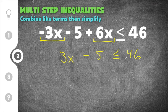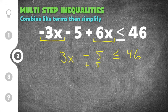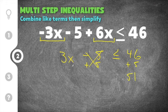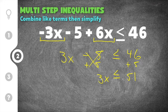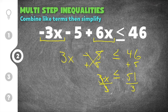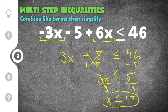Our variable is on the left. All the like terms have been combined and we need to move this constant from the same side as the variable to the opposite side. I have to get rid of this minus 5 on the left side. The opposite of minus 5 is plus 5, so I'm going to add 5 so that the 5's cancel, and also add 5 on the right side. On the right we have 46 plus 5 which is 51. I bring down 3x and less than or equal to because they did not change. Now we just have our variable with the coefficient of 3, which is like saying 3 times x, so to undo 3 times x we're going to divide by 3. The 3's cancel and we divide the other side by 3 as well. We have x is less than or equal to 51 divided by 3, which is 17. So our solution to this multi-step inequality is x is less than or equal to 17.